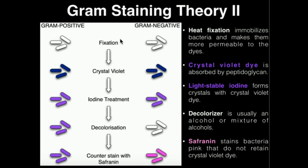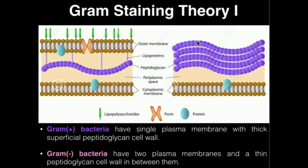The first step is not technically part of the gram stain itself. We're going to do something called heat fixation. We'll have a microscope slide with a smear of the bacteria on it, and we'll perform heat fixation — we'll watch a video of that in the demonstration video. In heat fixation, we're doing two things: first, immobilizing the bacteria, and second, heating them makes them more permeable to the dyes, meaning we can actually get the dyes to go in and stick in these peptidoglycan layers.